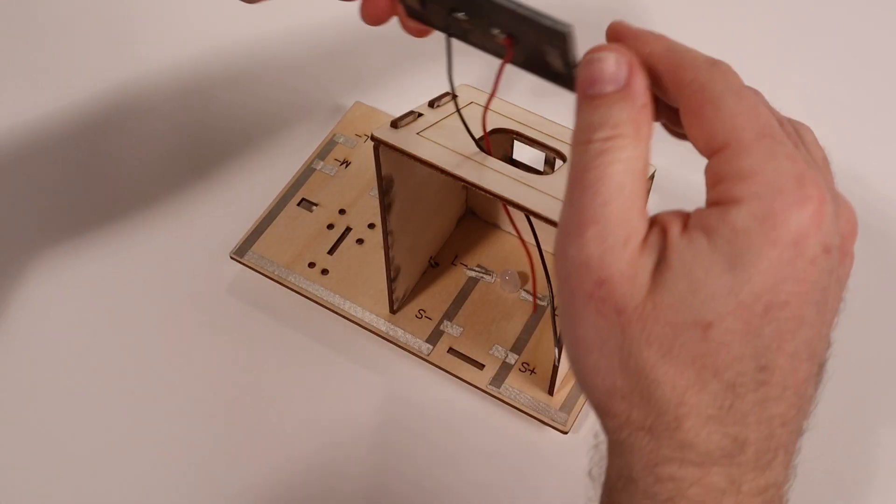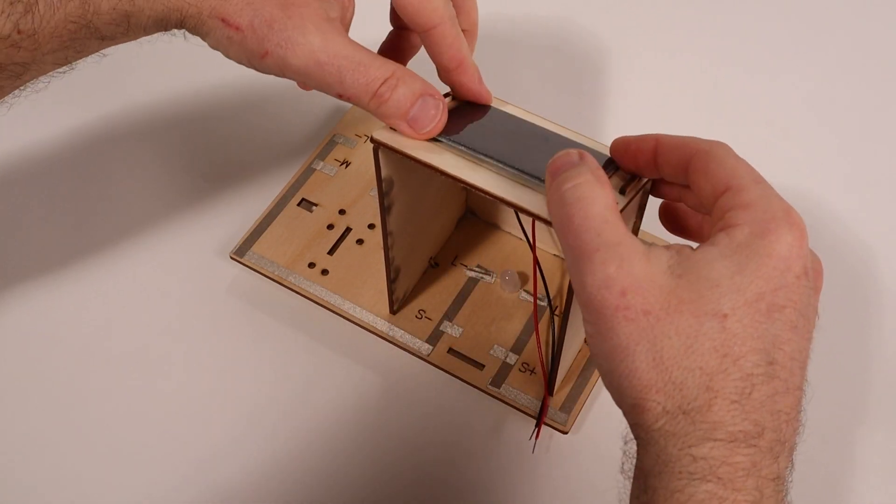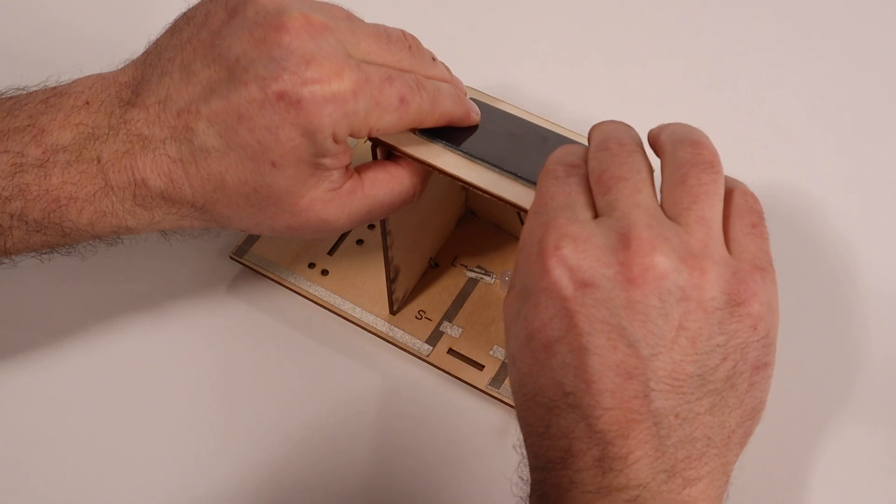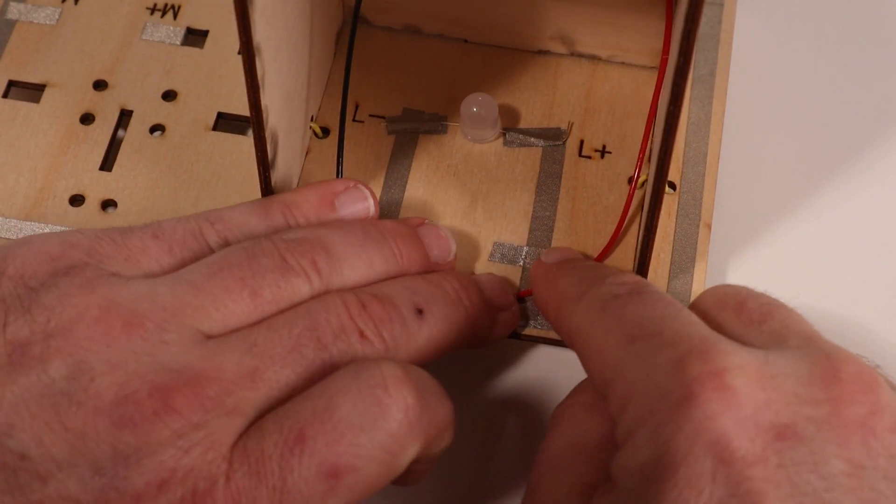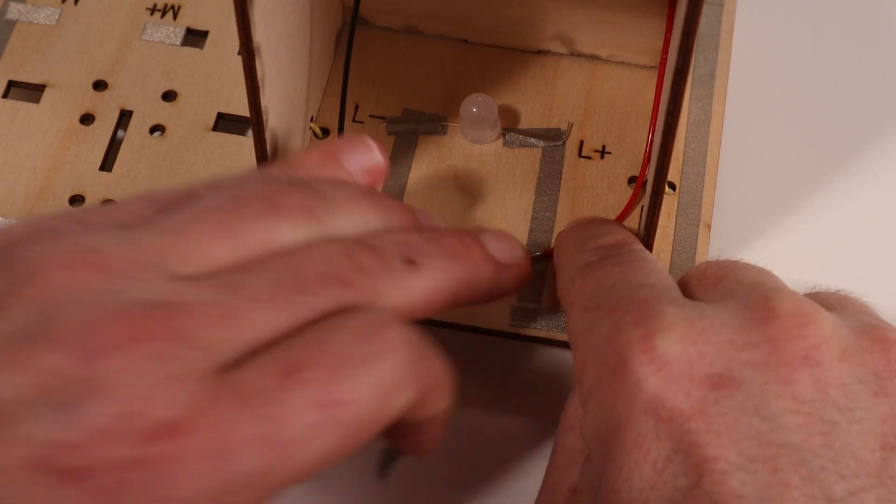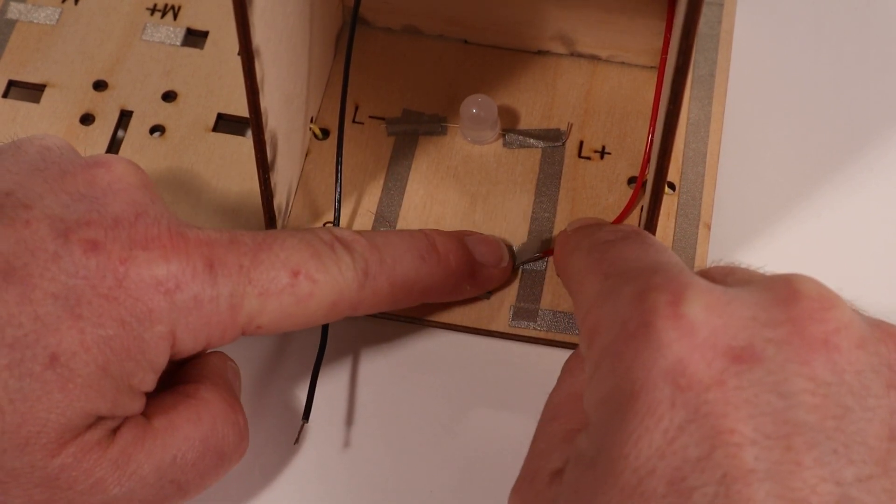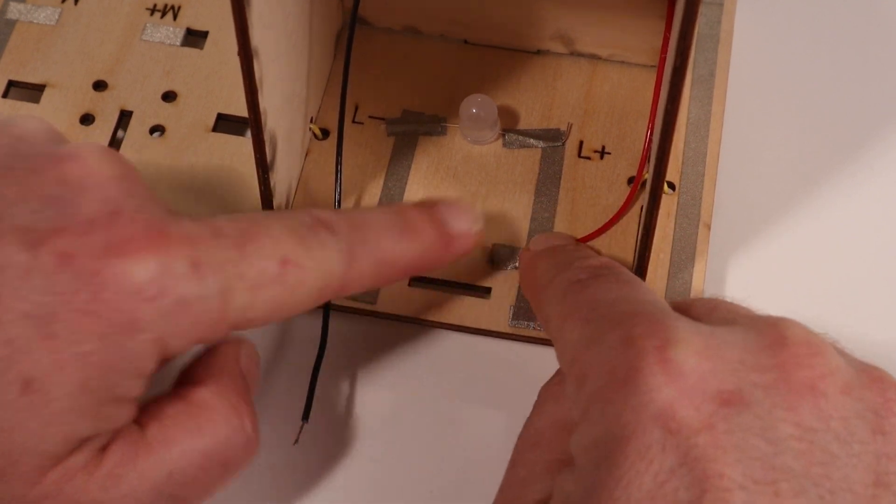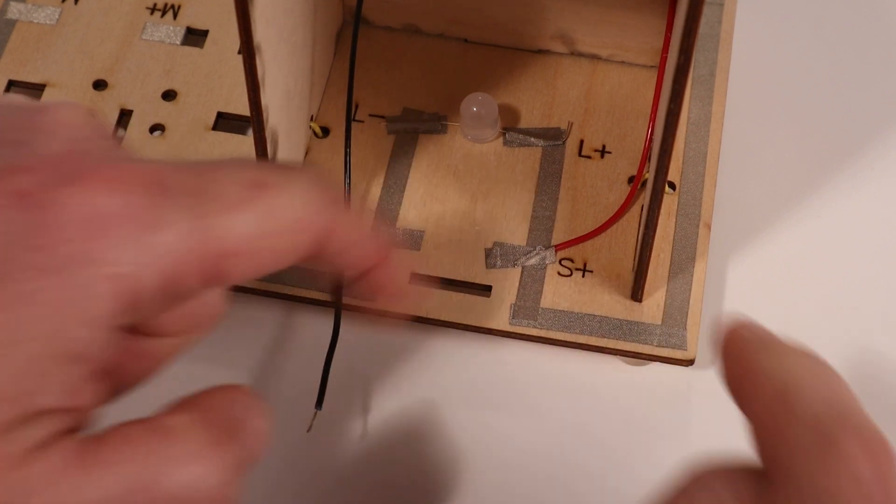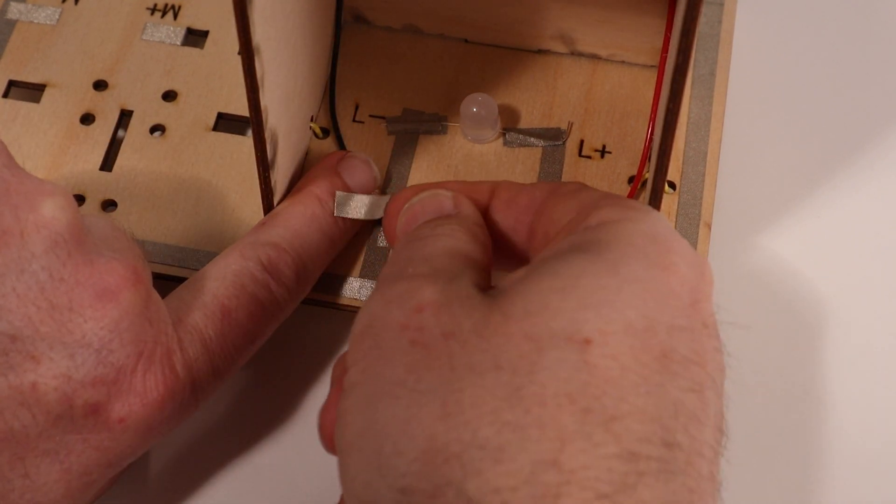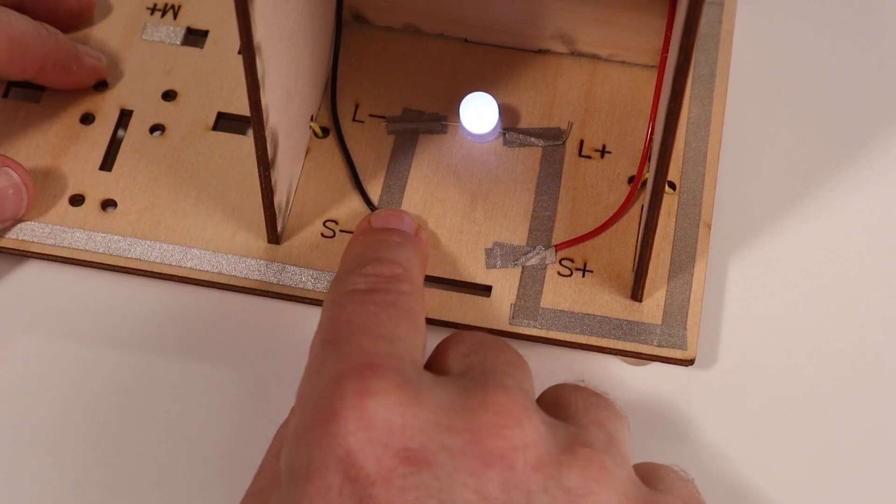Then thread the wires through the hole in the roof, then press the solar panel down in place to stick it to the roof. Attach the solar panel wires to the S positive and S negative. Place the red wire over the S plus and hold it in place with a short piece of maker tape. Put the black wire over the S minus connection and hold it in place with a small piece of maker tape.